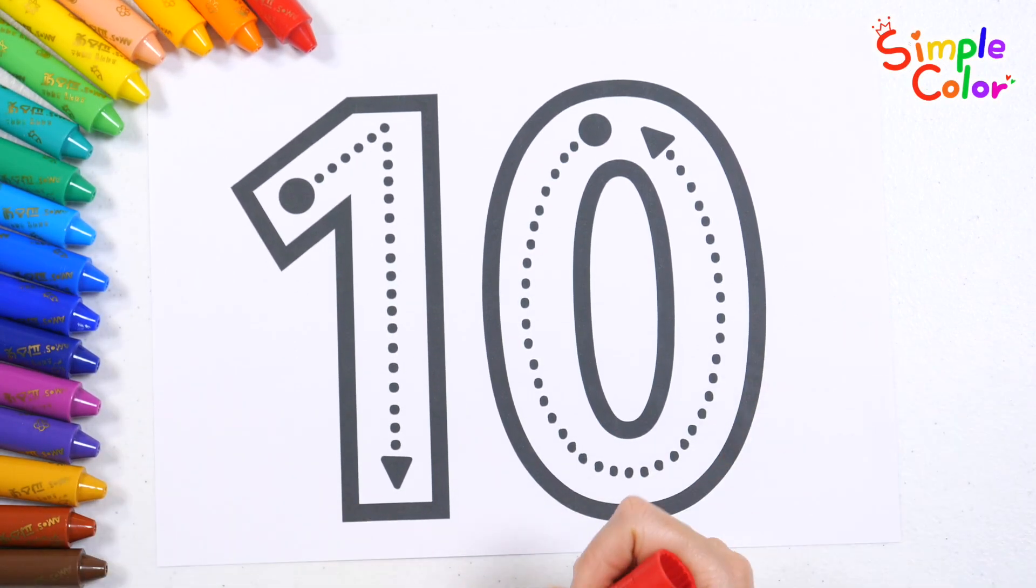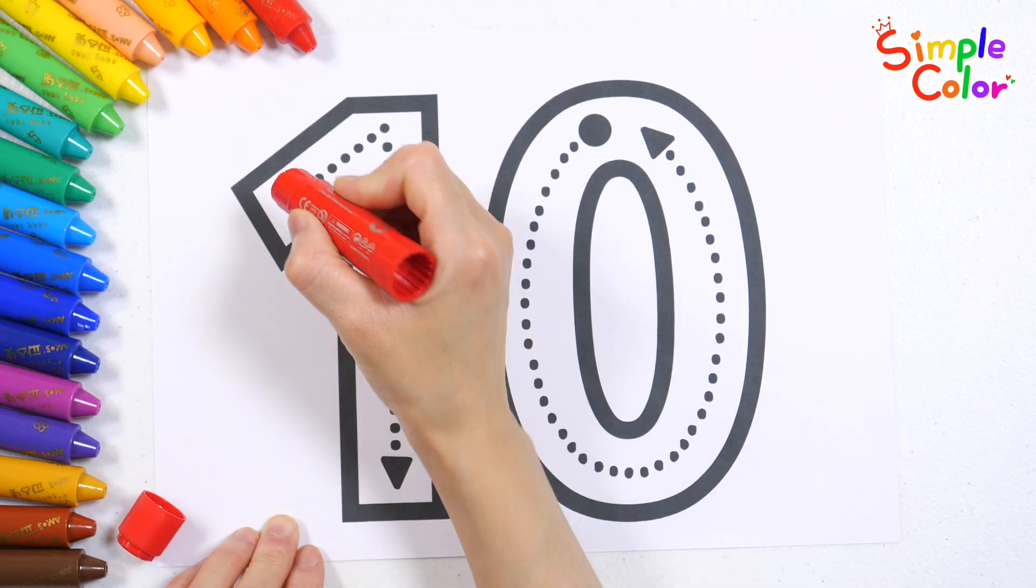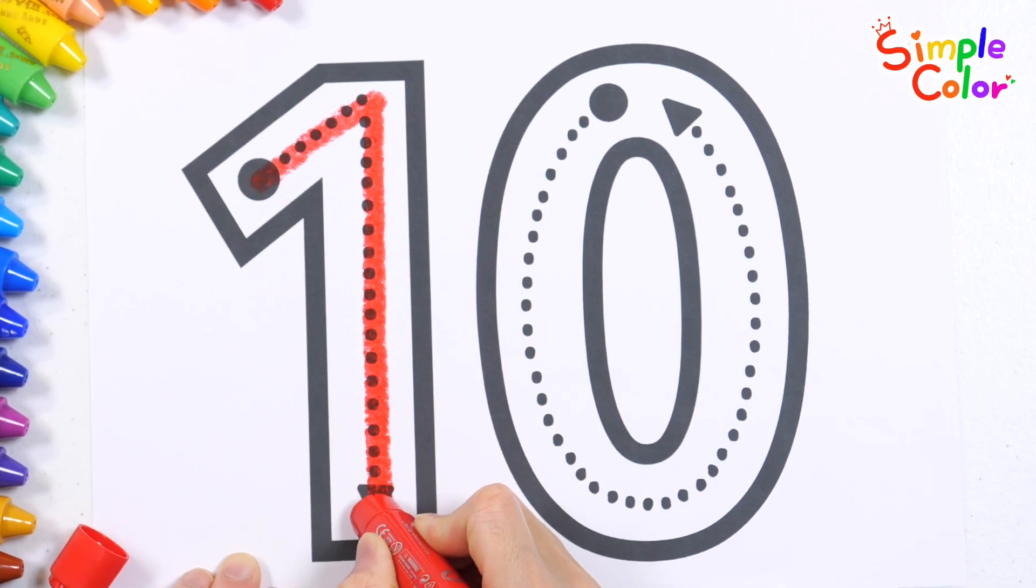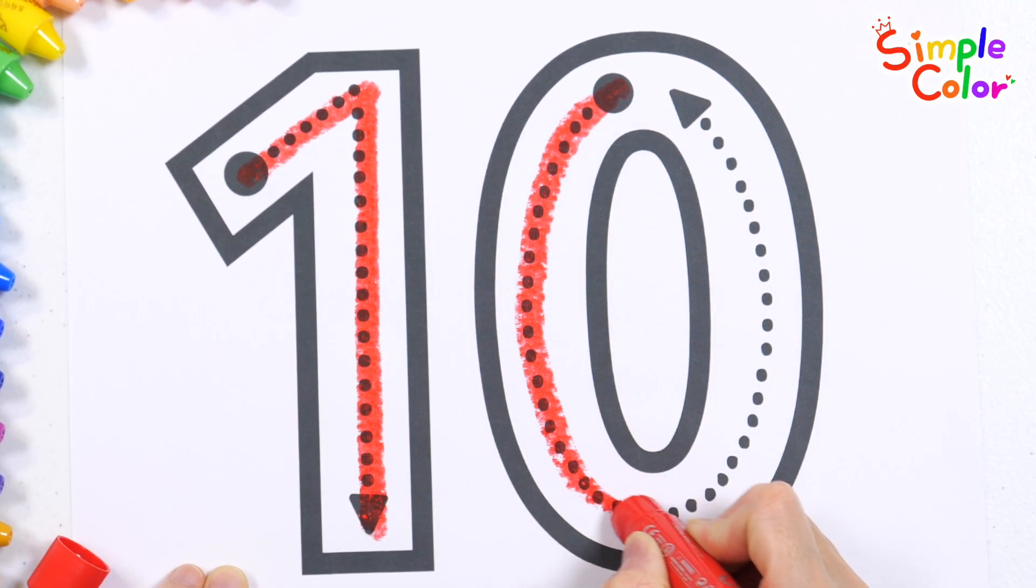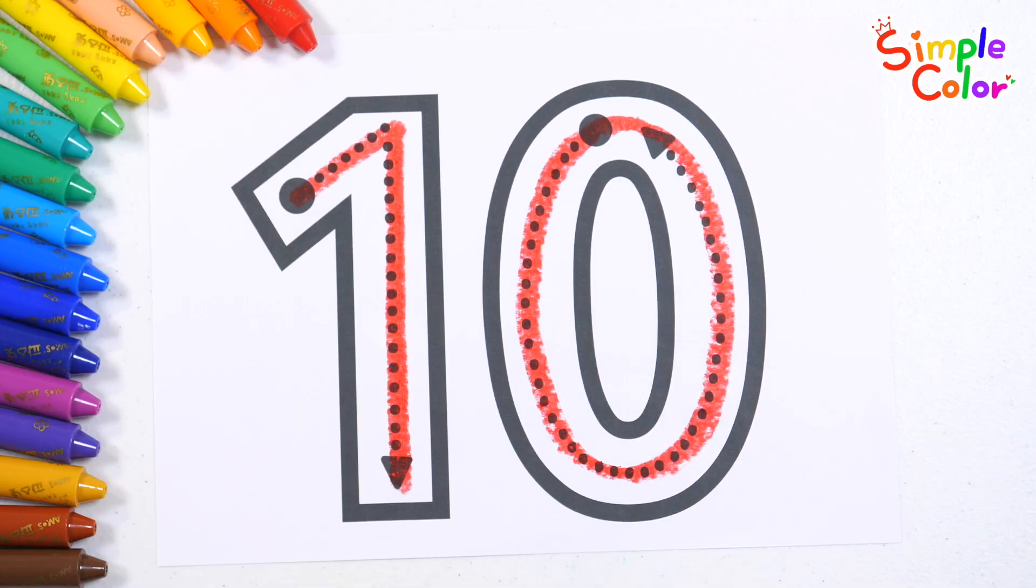Let's write the number 10 following the arrows. A is for Atlas, map in hand. B is for boat, let's sail to land. C is for cave, dark and deep. D is for dragon, no time to sleep. 10. Good job!